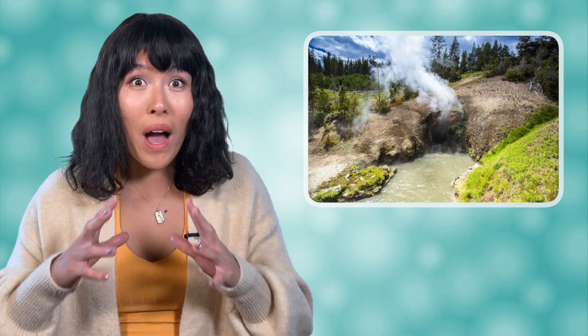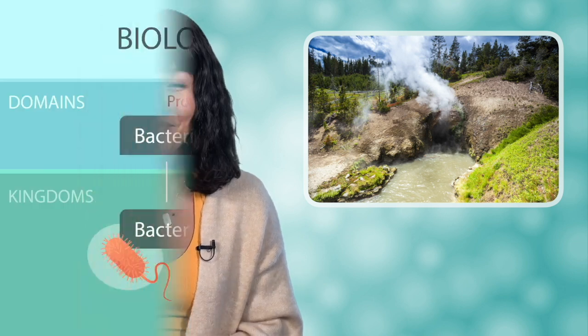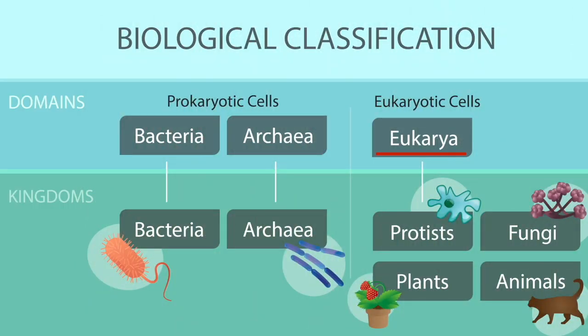In the archaea kingdom, we'll look at thermophiles, such as the Sulfolobus, which can be found in many of the hydrothermal springs and volcanoes at Yellowstone National Park. Archaea are known for being able to survive temperatures well above the boiling point of water, so these seemingly inhospitable locations are home sweet home to them.